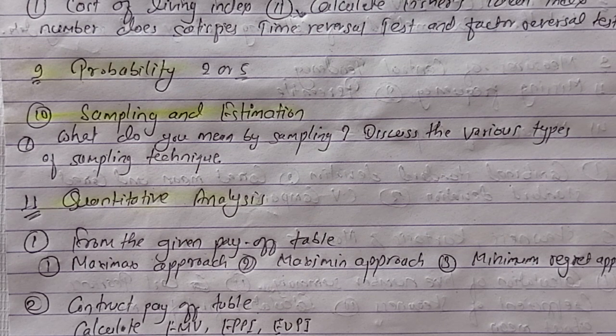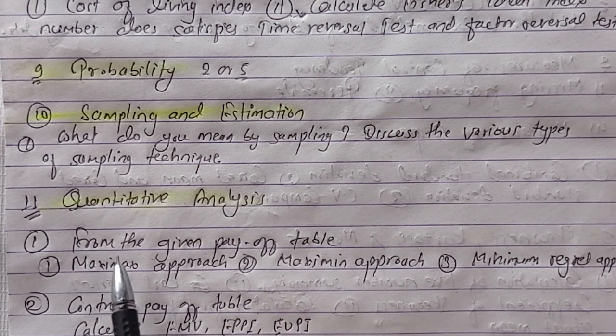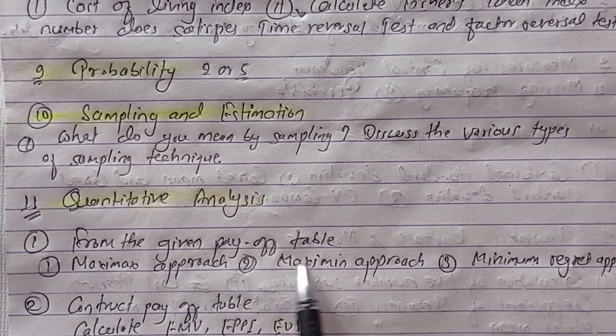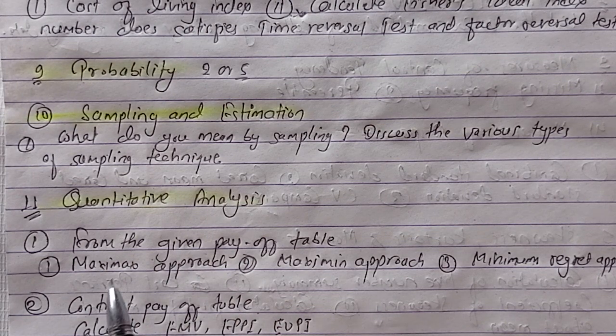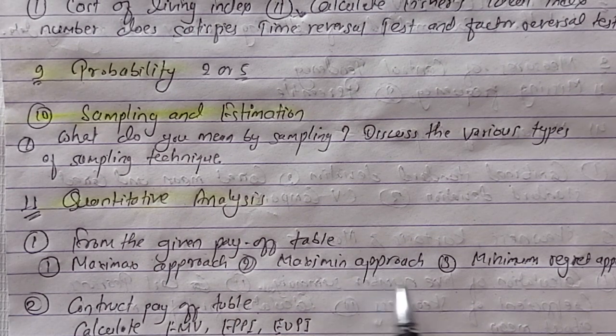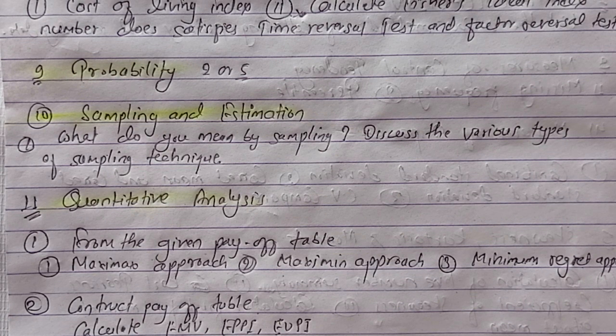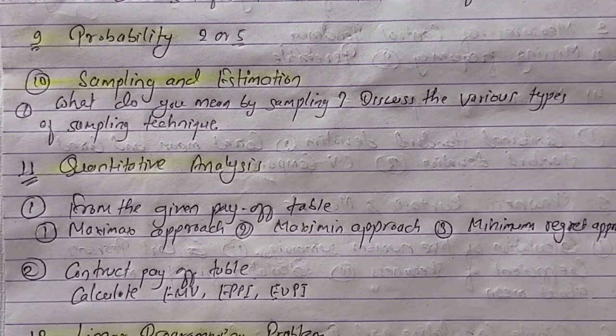This is a long numerical question, short for 5 marks. From the given pay-off table, you can see the maximax approach, maximin approach or minimax regret approach. So you can see the amount of 5 marks. There is a chance at 5 marks.